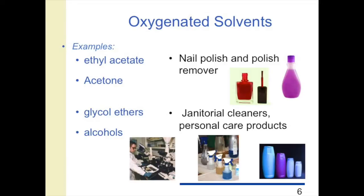There are many different types of solvents that add oxygen to a hydrocarbon to make what we call oxygenated solvents. Examples are acetates or acetone. Acetates are used widely in nail polish; acetone is used as a nail polish remover. Glycol ethers are used in janitorial cleaners. Alcohols are used in cleaners and personal care products. This is just a few examples of oxygenated solvents.